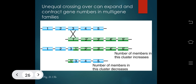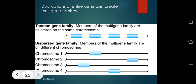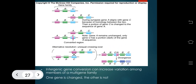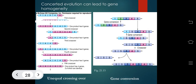Unequal crossing over can expand and contract gene numbers in multi-gene families — the number of members in one cluster increases while another decreases. During synapsis, gene A aligns with gene C due to homology; a portion of gene C is changed to the sequence of gene A. Endogenic gene conversion can increase variation among members of a multi-gene family. Concerted evolution through gene conversion can lead to gene homogeneity.